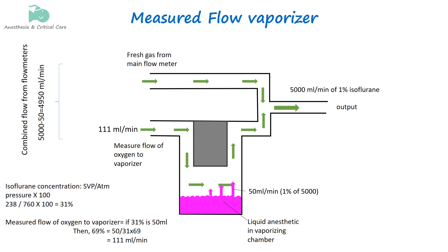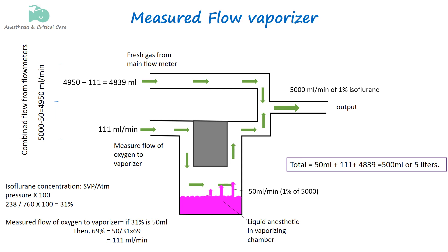This flow must be deducted from the total flow of 4950 mL/min so that the main flowmeter delivers 4839 mL/min. Adding the vapor flow, measured flow, and the fresh gas flow from the main flowmeter gives 5 liters per minute, which contains 50 mL of isoflurane representing 1% of the mixture.